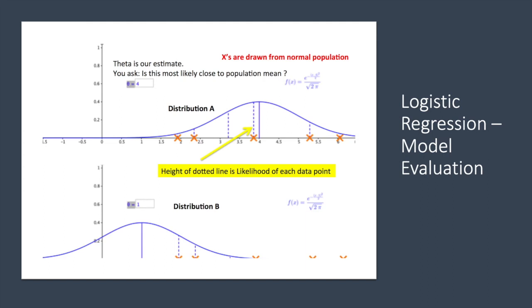In logistic regression, on the other hand, we maximize the likelihood of our training set according to the model. In statistics, the likelihood function defines how likely the observation is according to our model.